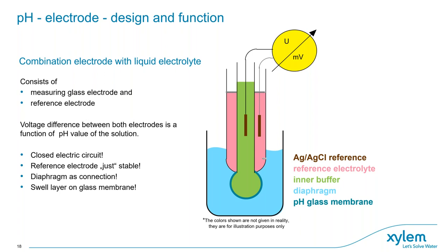Therefore we use the reference electrode as a counterpart — it should be stable and constant, so we measure only the changing potential at the glass electrode. To measure the glass electrode potential versus the reference electrode, we need to connect the reference with the sample via the so-called diaphragm. This closes the electric circuit so we can measure millivolts with a pH meter and calculate the pH value. The circuit leads from the meter through the inner buffer, through the glass membrane, through the sample, through the diaphragm, through the reference, and back to the meter. Anything that disturbs this closed circuit will disturb the measurement result.